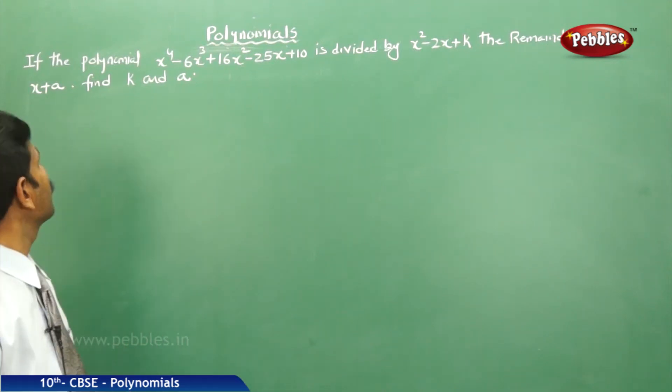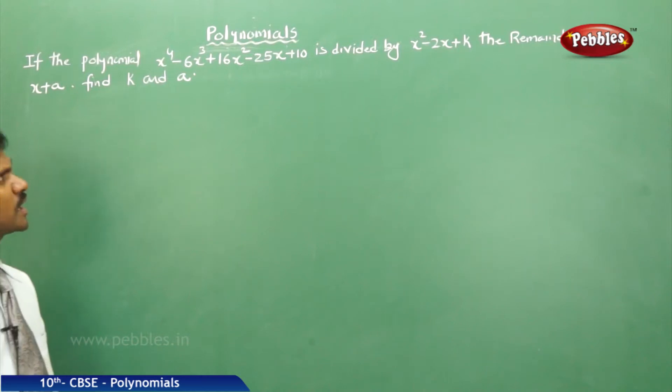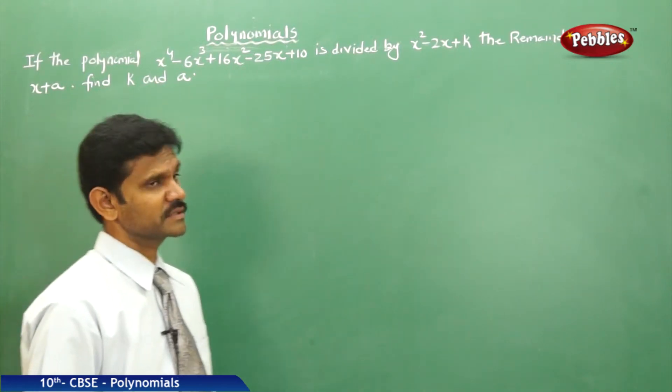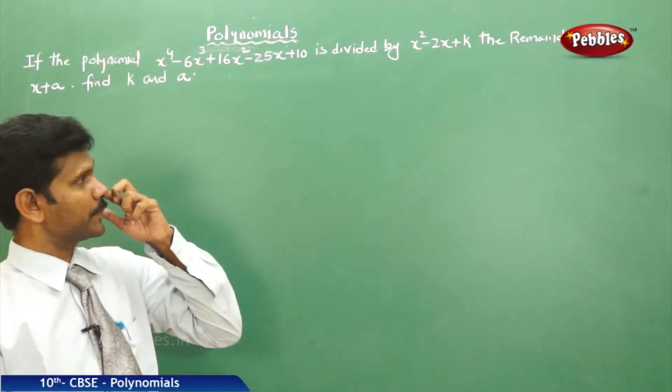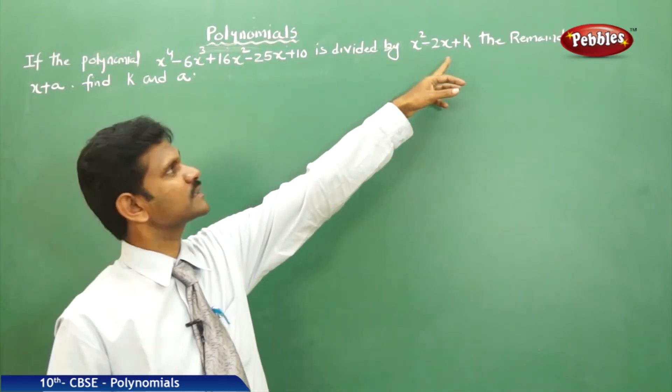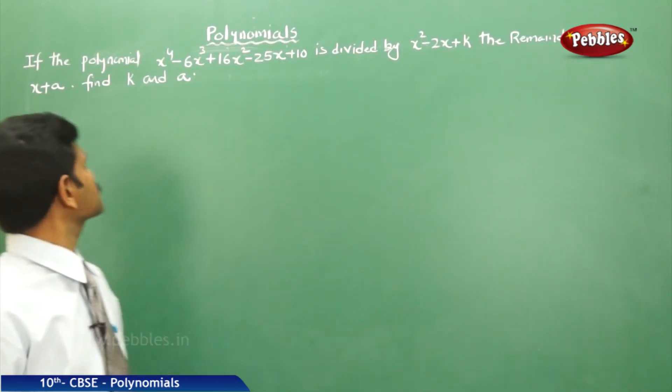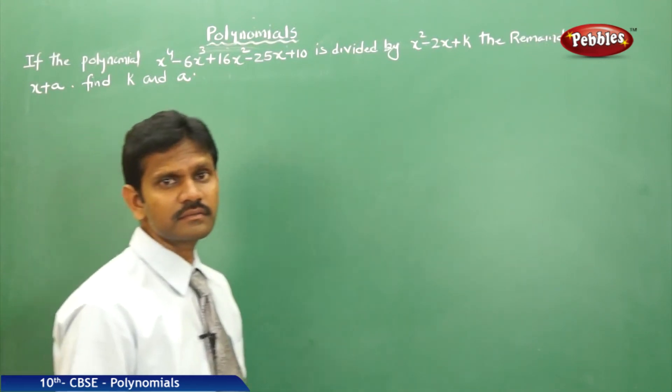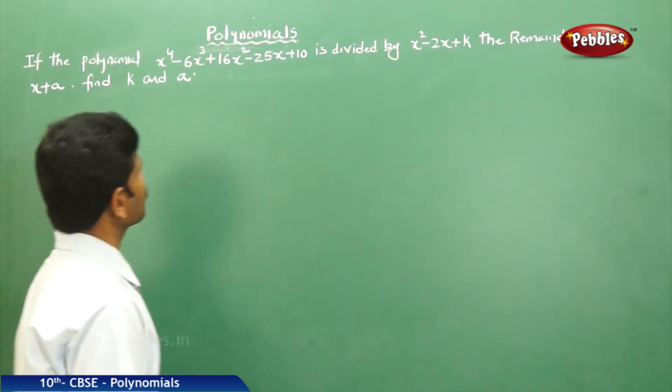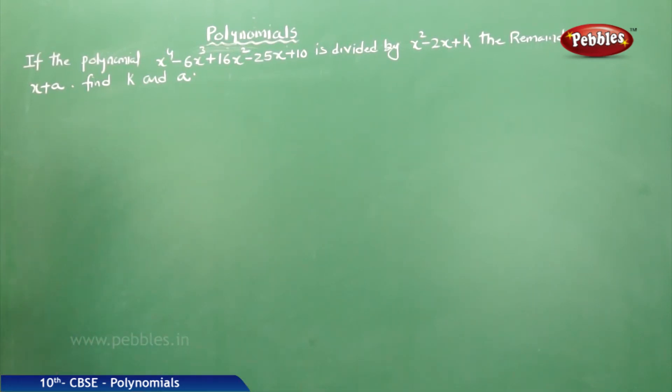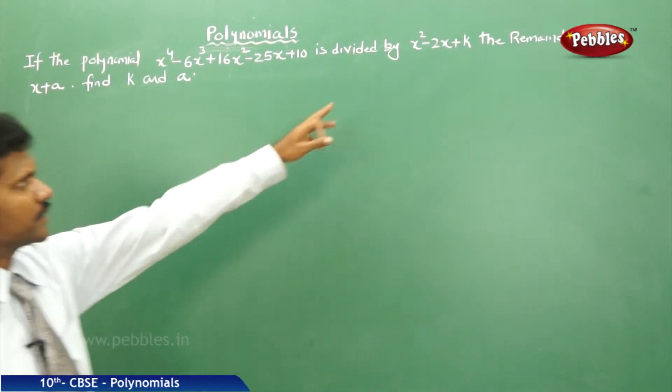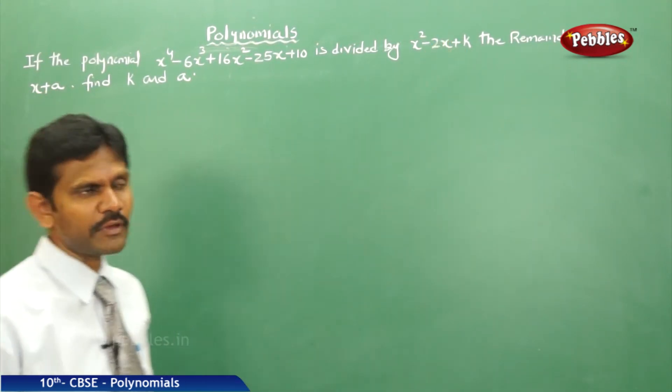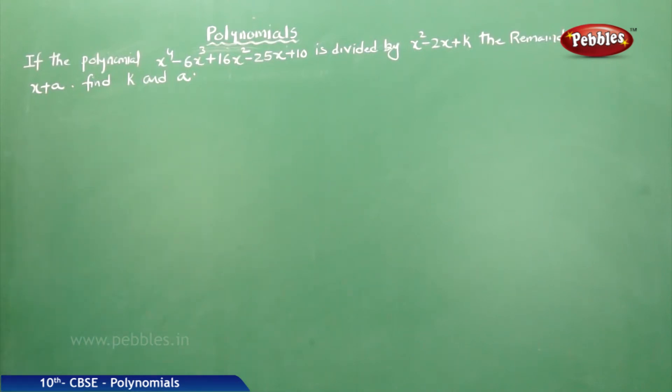Now see your next problem. If the polynomial x⁴ - 6x³ + 16x² - 25x + 10 is divided by x² - 2x + k, the remainder is x + a. Find k and a. Here, find the value of k and a. That is, you have to find out the a value and the k value.